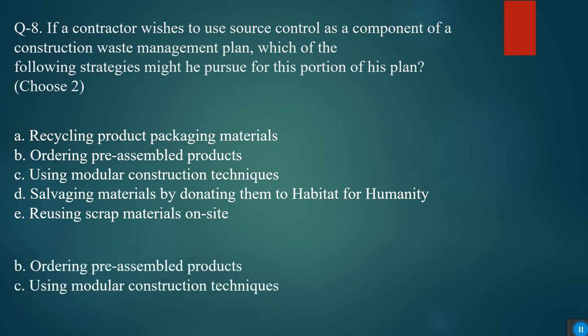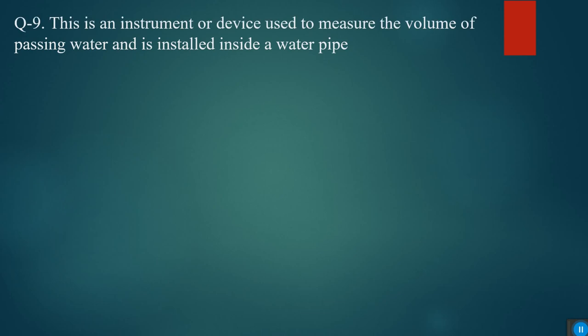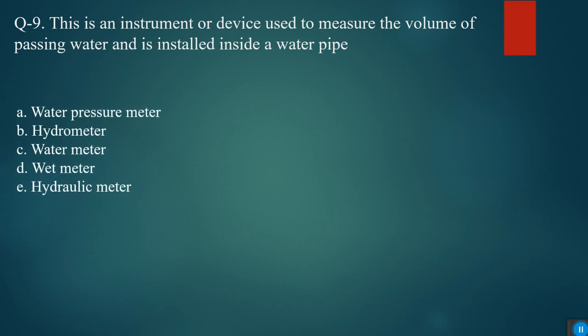This is an instrument or device used to measure the volume of passing water and is installed inside a water pipe. Options are water pressure meter, hydrometer, water meter, wet meter, or hydraulic meter. The answer is water meter.